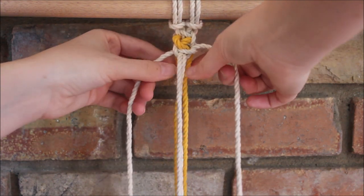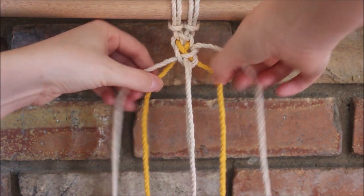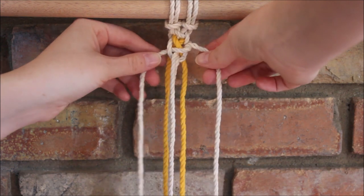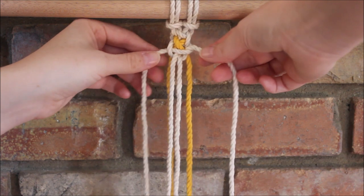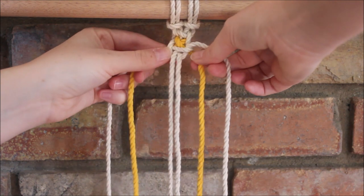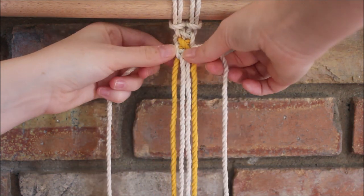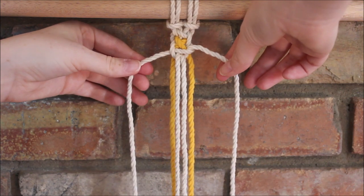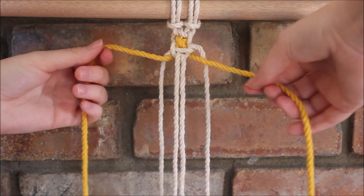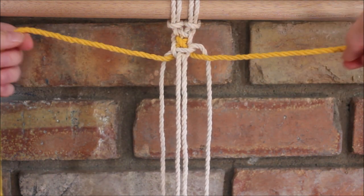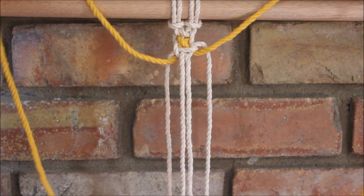And as I pull it tight, I'm also going to pull on those two yellow cords to kind of adjust the X and tighten that up as well. Just like that. Now I'm just going to take those yellow cords, twist them so they're in front of the neutral colors, and I'm going to drape them out of my way once again.